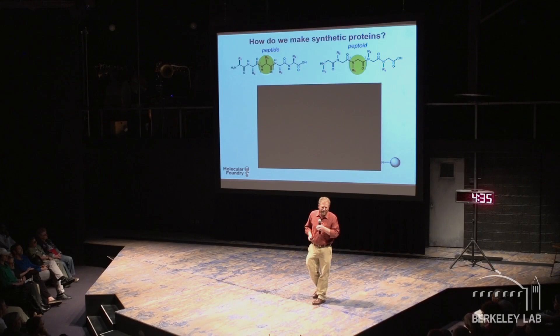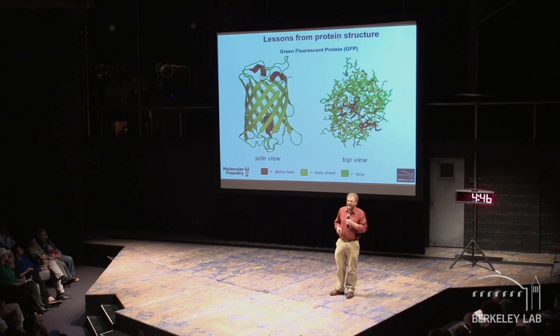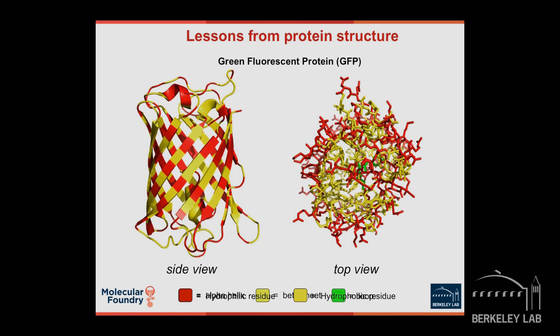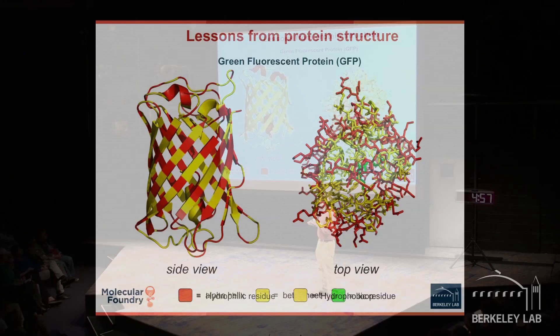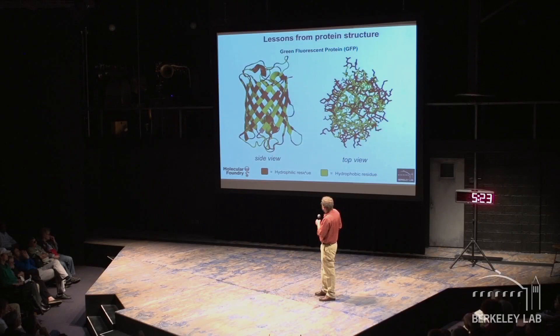We need to learn from biology. Here's an example of a beautiful protein called green fluorescent protein — it's from jellyfish and actually glows green. We can learn from this by looking at it through a special set of glasses that show you amino acids that like water and amino acids that don't like water. This idea of oil and water separating from one another is one of the fundamental principles. When we look at it that way, you can see some interesting patterns: red is hydrophilic, meaning it likes contact with water.